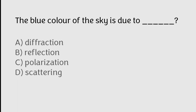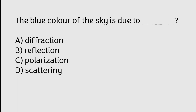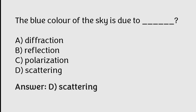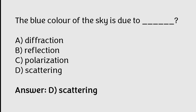The blue color of the sky is due to: diffraction, reflection, polarization, scattering. The correct answer is Option D. The blue color of the sky is due to scattering.